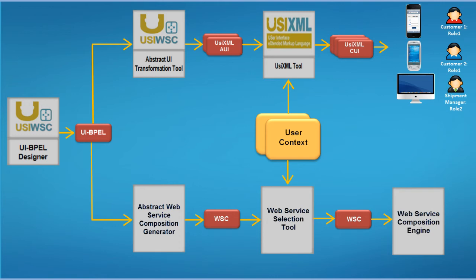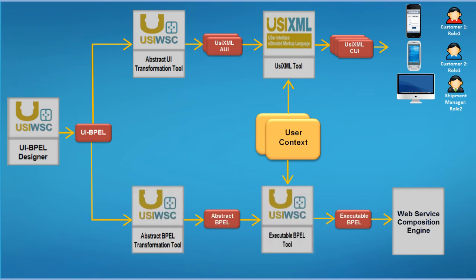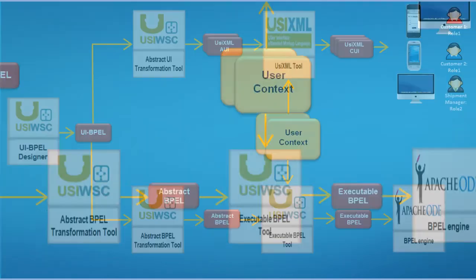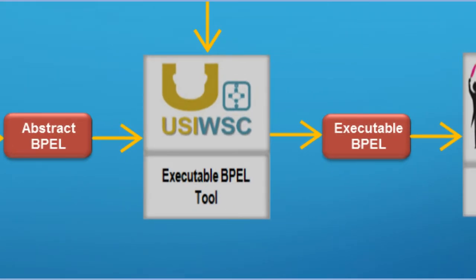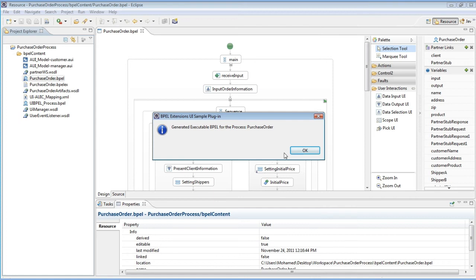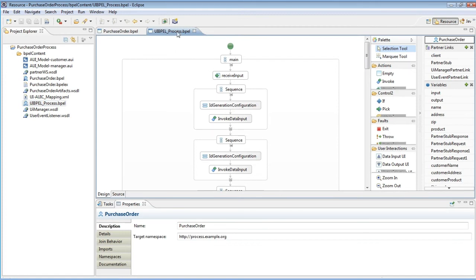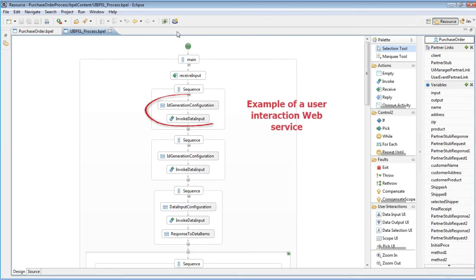To be compliant with the BPEL standard, the USIWSC framework deploys a UIBPEL process as a specific BPEL process so that any BPEL engine can be used to execute the interactive web service composition. The framework generates a specific BPEL definition of the purchase order process from the UIBPEL definition. This specific BPEL process invokes the web services predefined in the UIBPEL process, as well as a particular web service that implements the UIBPEL user interaction activities.